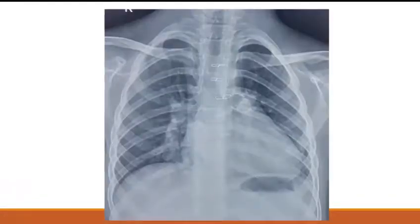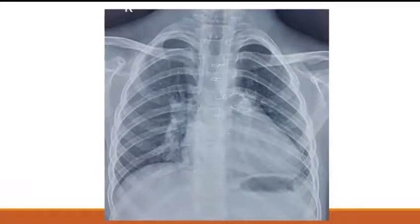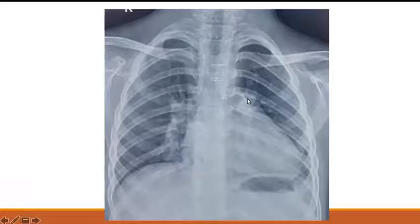This is an 8-year-old child who is post-operated — you can see the sternal wires. This is a post-operative chest X-ray PA view, situs solitus, levocardia, CT ratio around 0.6, no right atrial enlargement. There is prominence of the pulmonary artery — it appears dilated. Apart from that, there is a calcified structure which can be seen here, most likely in the RVOT and pulmonary artery region.